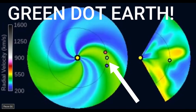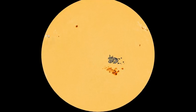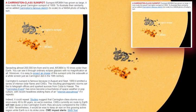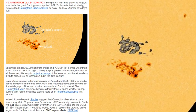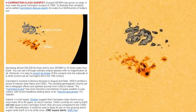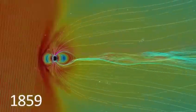For those of you that don't know what the Carrington Event was, in August and September of 1859 it emitted a series of intense solar flares and CMEs, just like we're seeing today. The resulting geomagnetic storm set fire to telegraph offices and sparked auroras from Cuba to Hawaii.